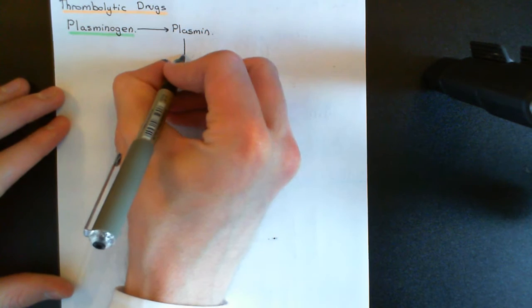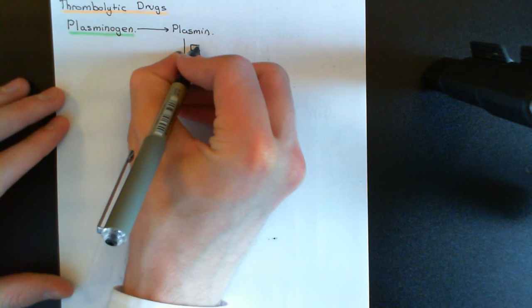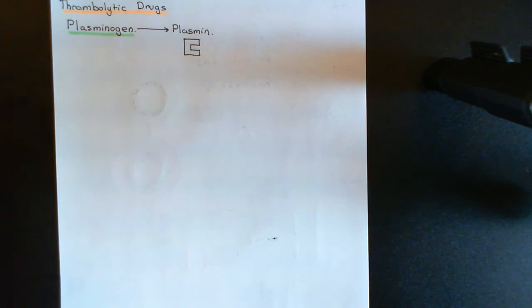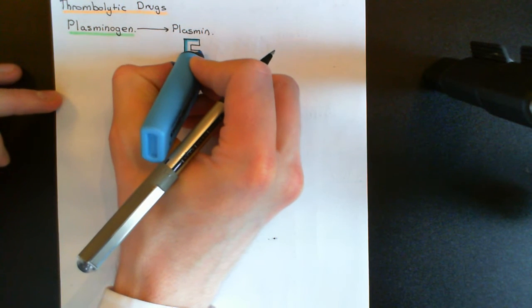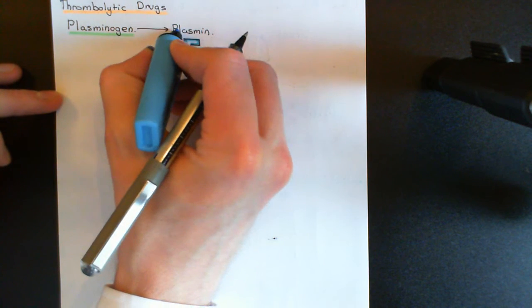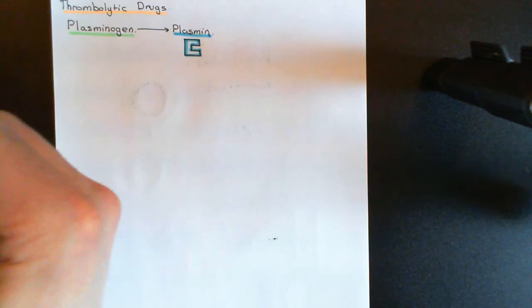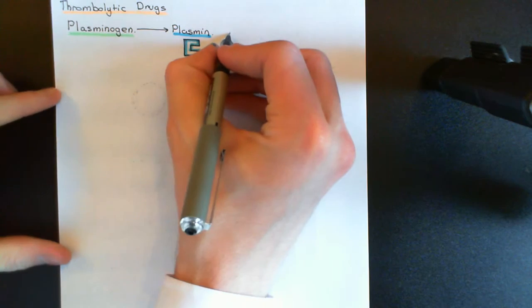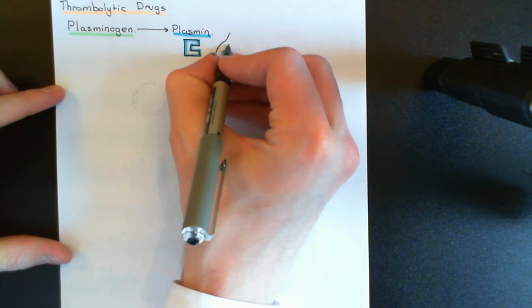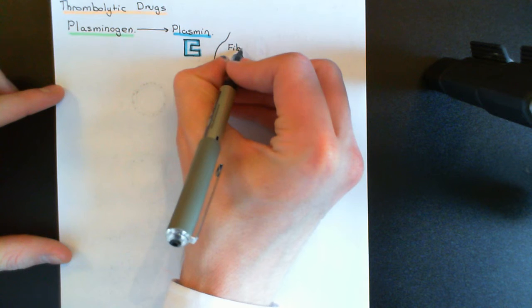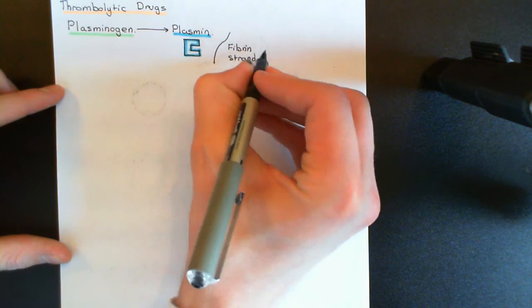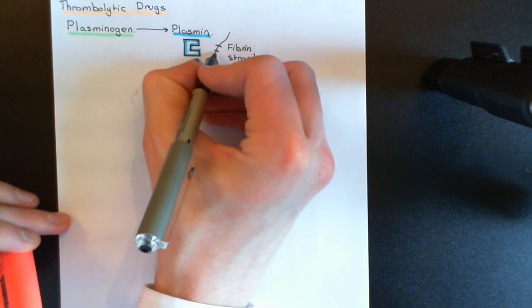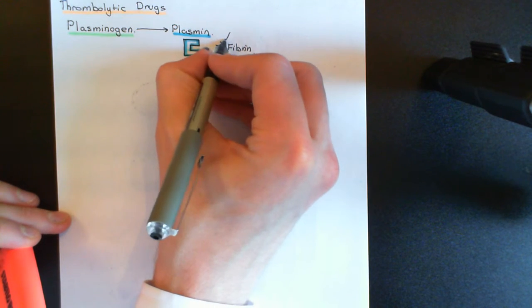Once activated, this enzyme plasmin is capable of breaking down fibrin strands. If you've got a fibrin strand which is part of the fibrin meshwork holding together the thrombus, what plasmin can do is make lots of little cuts in this polymer. Remember, a fibrin strand is made out of lots of fibrin monomers. Plasmin can break up the fibrin strand into lots of little pieces and therefore break up fibrin meshworks.